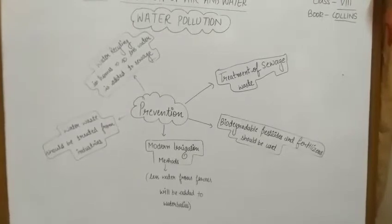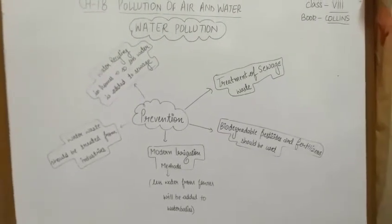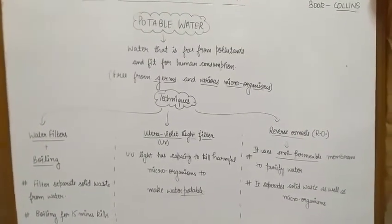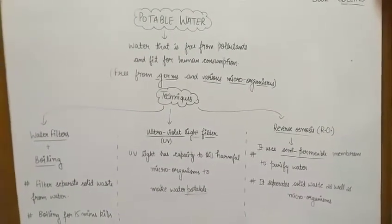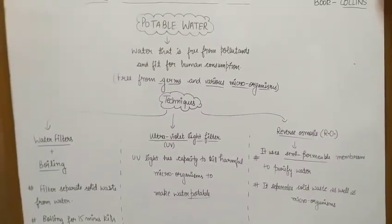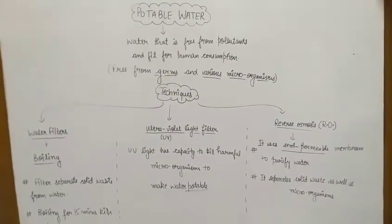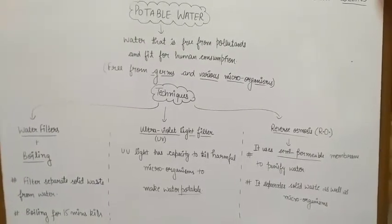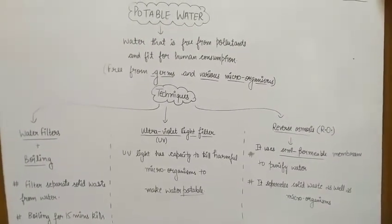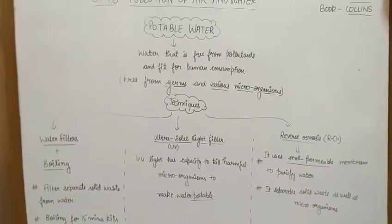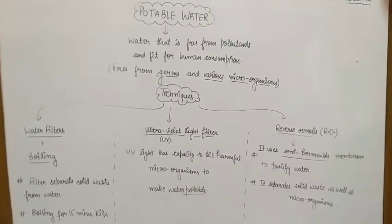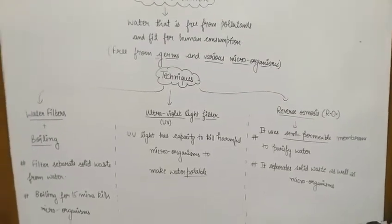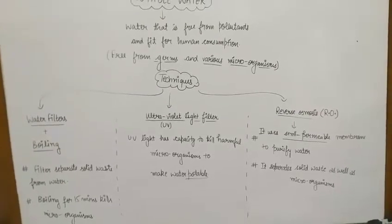The second last topic of our chapter is potable water. Potable water is water that is free from pollutants and harmful microorganisms — it is totally fit for human consumption. We have three techniques to obtain potable water.